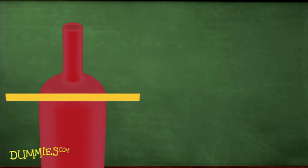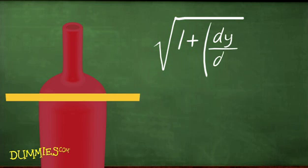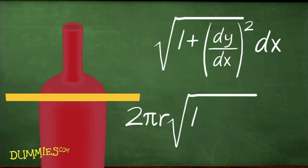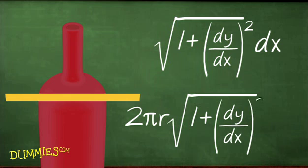The band's width is the same as the length of the infinitesimal hypotenuse you use to figure arc length, namely, the square root of 1 plus (dy/dx)² times dx. So the surface area of a representative band, from length times width, is 2πr times the square root of 1 plus (dy/dx)² times dx.